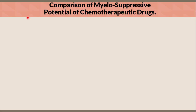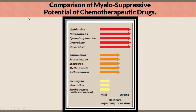Comparison of myelosuppressive potential of chemotherapeutic drugs. The first category has strong myelosuppressive potential. The minimal myelosuppressive potential category includes bleomycin, vincristine, and methotrexate with leucovorin.